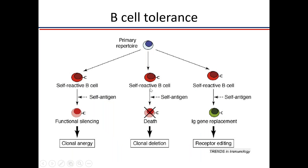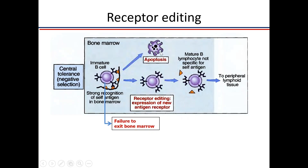In B cells, if a developing cell in the bone marrow binds the self-antigen with very high affinity — where stromal cells express the self-antigen — it dies. Sometimes, binding with very low affinity causes the cell to become functionally silenced without dying. The other mechanism unique to B cells is receptor editing: the B cell changes its immunoglobulin molecule to one that does not react to the self-antigen. So in B cells, either the cell dies or the immunoglobulin molecule changes to become non-reactive.